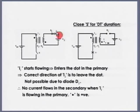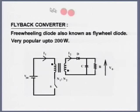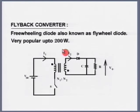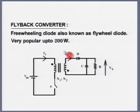In addition to the transfer function of the buck-boost converter, I have another term which is the turns ratio N2 by N1. There is a power supply topology known as the flyback converter. This diode is also known as the freewheeling diode, also known as the flywheel diode. It is very popular up to about 150 to 200 watts — we will see why. This is also known as the isolated buck-boost because the transfer function is the same as the buck-boost converter, but there is isolation between input and output.